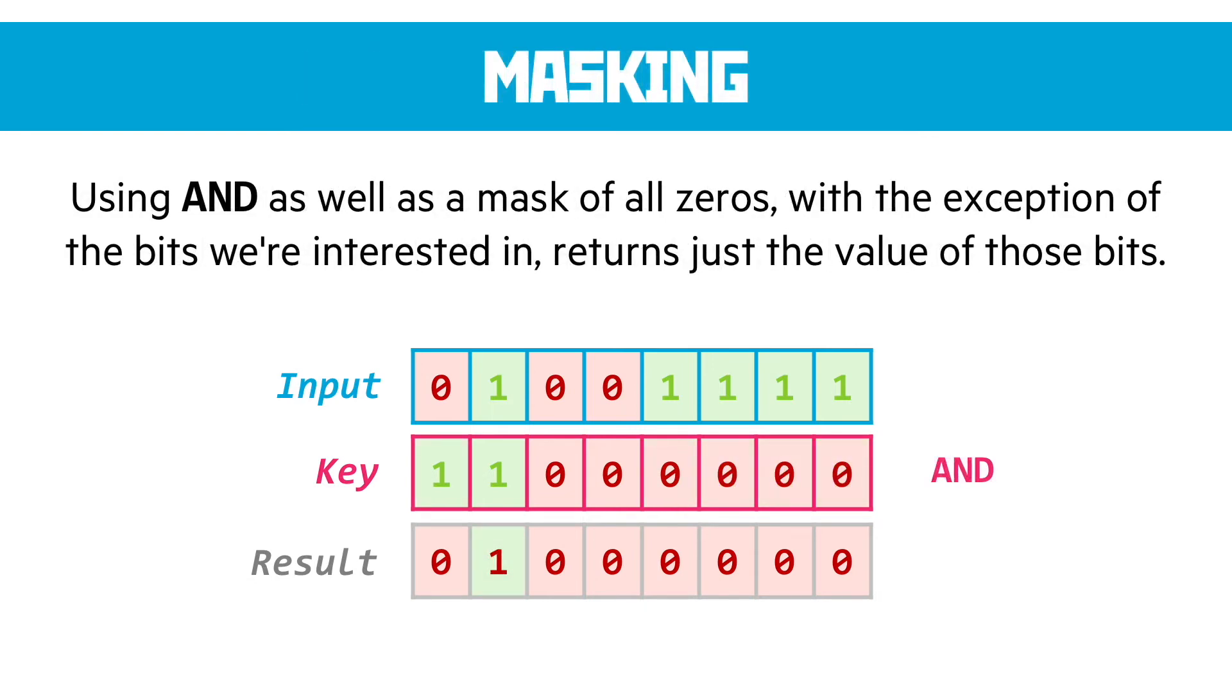Masking then is where we want to identify only part of the byte. And in this case, in this question, if we wanted to identify the two most significant bits, what we do is we use an AND condition, and we use a key where we have all zeros except where we want to identify what the bits in the input are. So you'll see here because I want the two most significant bits, I'm putting one in the two leftmost places.